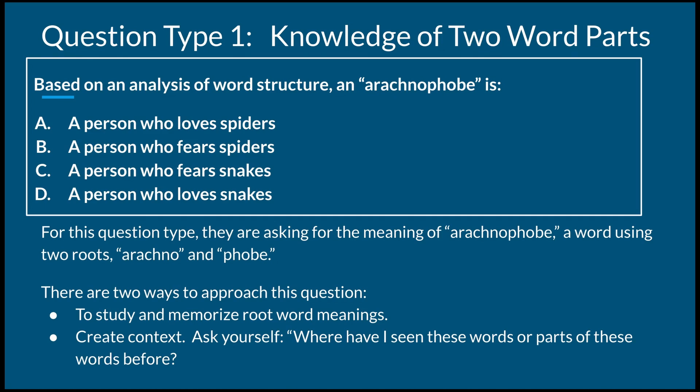In this first question, we're looking at knowledge of two different word parts. Here's the question: based on analysis of word structure, an arachnophobe is A, a person who loves spiders; B, a person who fears spiders; C, a person who fears snakes; or D, a person who loves snakes.